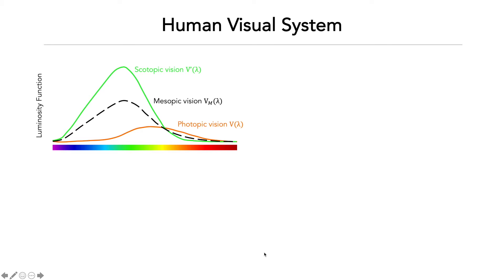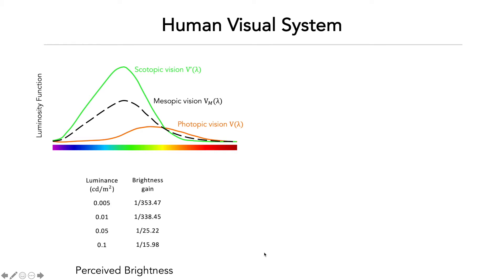Given the luminosity function of the human eye and the spectral power of a white flash and the deep red flash, we can compute the perceived brightness by the human eye. In extra dim conditions, using white flash is over two orders of magnitude brighter than using the red flash as perceived by the human eye, when the camera receives the same amount of signals.